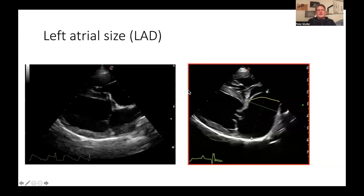Once the left atrium enlarges, the inter-atrial septum deviates towards the transducer. This would be a normal left atrium, this shows some enlargement, and in this dog the left atrium is markedly enlarged. Please be aware of the direction in which the inter-atrial septum deviates — it deviates towards the transducer in a specific way. This is important.